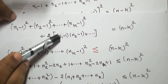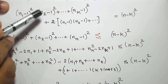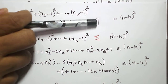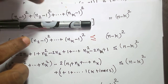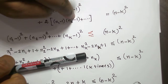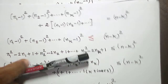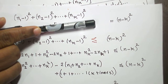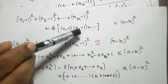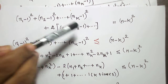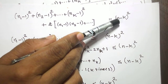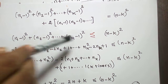Notice that the sum of the squared terms plus the sum of the cross-product terms equals (n-k)². If I omit the cross-product term (which is non-negative), the left-hand side becomes smaller. For example, if one part is 5 and another is 10, their sum is 15; removing the 10 gives 5, which is less than 15. So dropping the second term gives the inequality: (n1-1)² + (n2-1)² + ... + (nk-1)² ≤ (n-k)².